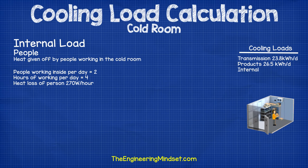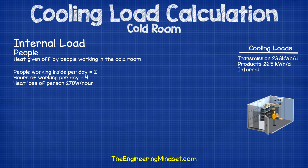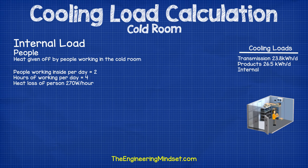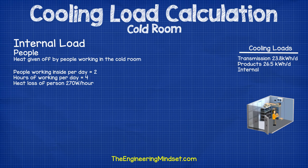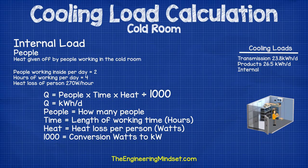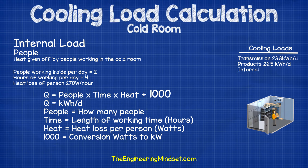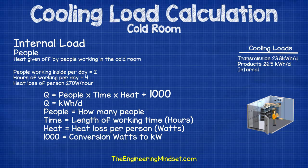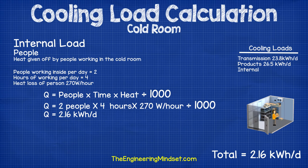Next we'll calculate the internal load from people working in the cold room, as people generate heat and we need to account for this. We'll estimate two people working in the store for four hours a day; at this temperature they will give off around 270 watts of heat per hour inside. Using the formula q equals people multiplied by time multiplied by heat divided by 1000, where 1000 converts watts to kilowatts, dropping those numbers in gives us 2.16 kilowatt hours per day.